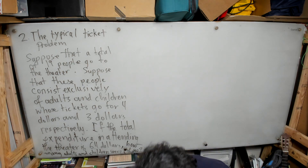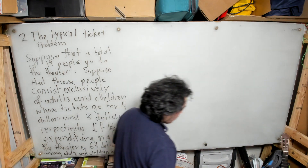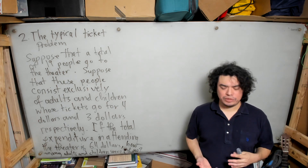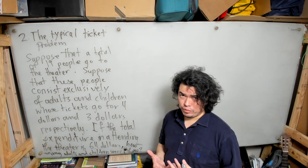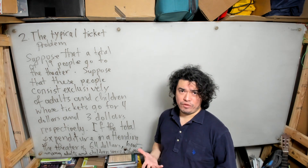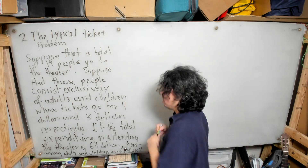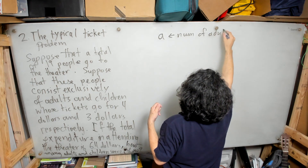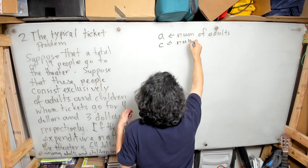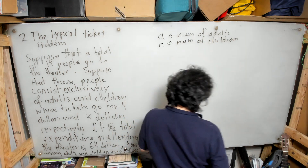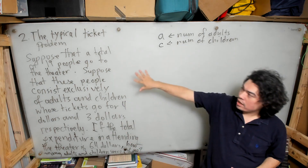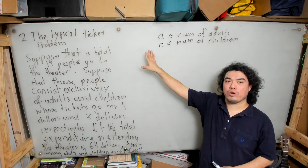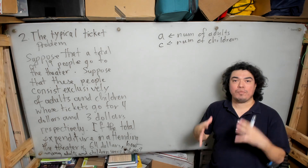Whenever you're going to solve equations, we have to give our variables names and state what they mean. We want to know how many adults there were and how many children, so we're going to let 'a' represent the number of adults and 'c' represent the number of children. Since there was a total of 19 people, a plus c must equal 19.